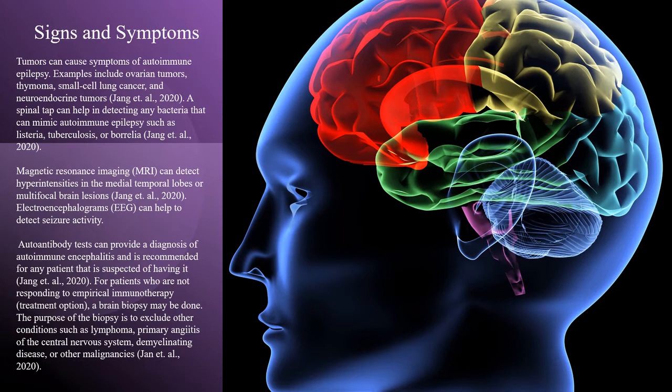Magnetic resonance imaging can detect hyperintensities in the medial temporal lobes or multifocal brain lesions. Electroencephalograms can help to detect seizure activity. Autoantibody tests can provide a diagnosis of autoimmune encephalitis and are recommended for any patient suspected of having it. For patients who are not responding to empirical immunotherapy, a brain biopsy may be done to exclude other conditions such as lymphoma, primary angiitis of the central nervous system, demyelinating disease, or other malignancies.